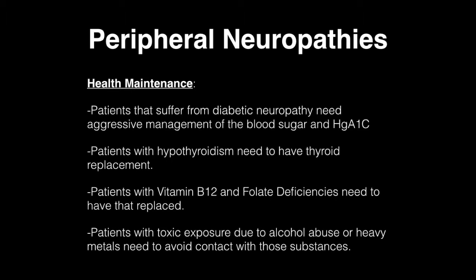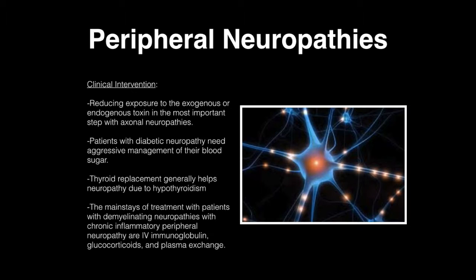Patients with diabetic neuropathy need aggressive management of their blood sugar and hemoglobin A1C. Patients with hypothyroidism need thyroid replacement. Patients with vitamin B12 and folate deficiency need supplementation, as these can cause neuropathy. Patients with toxic exposure due to alcohol abuse or heavy metals need to avoid those substances. Reducing exposure to exogenous or endogenous toxins is the most important step with axonal neuropathies. The mainstays of treatment for demyelinating neuropathies and chronic inflammatory peripheral neuropathy are IV immunoglobulin, glucocorticoids, and plasma exchange.